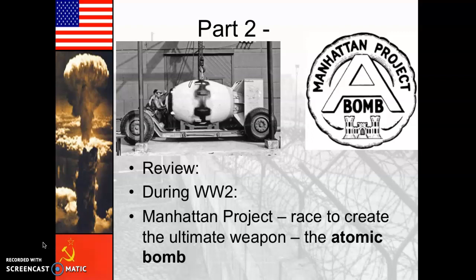Although Einstein conscientiously objected and didn't really move forward with the project, it was really spearheaded by scientist Robert Oppenheimer. They ultimately did develop the atomic bomb after multiple tests, both in the deserts of Nevada and New Mexico, and also in places where unfortunately there were indigenous people, like the Mariana Islands.